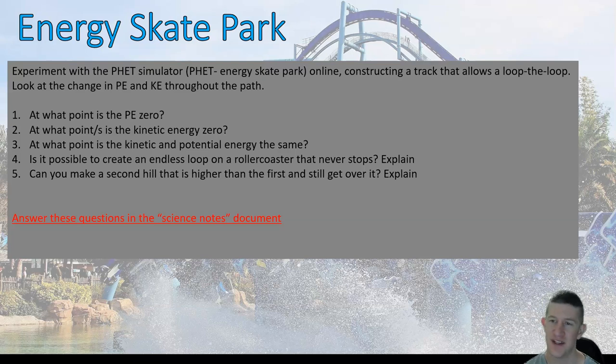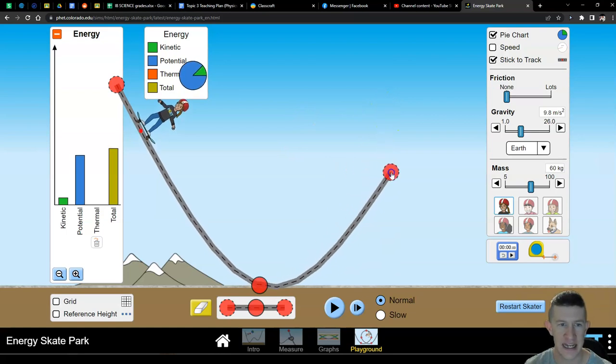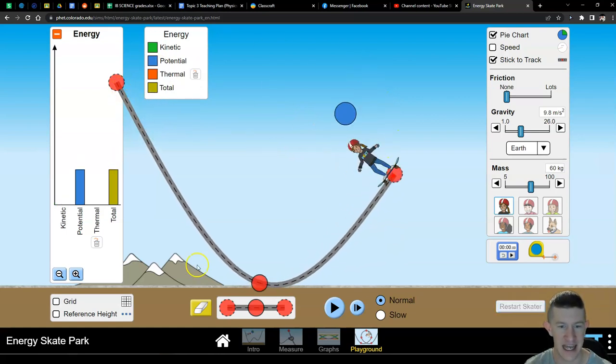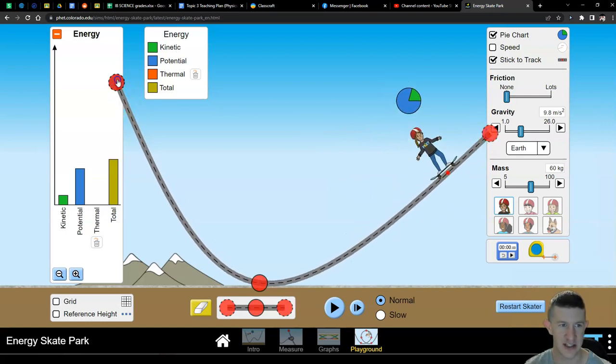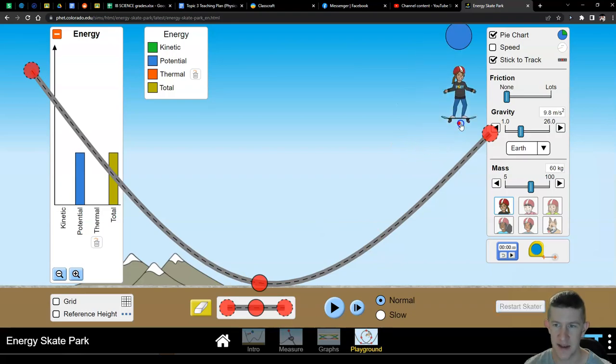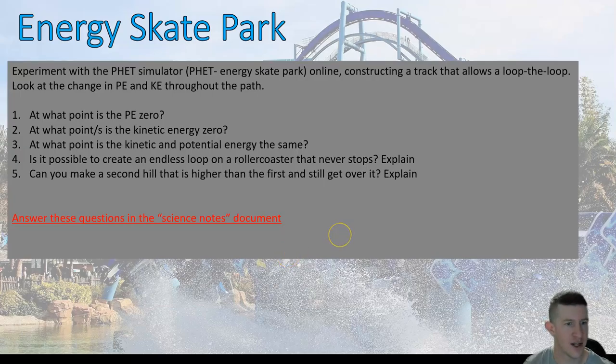I want you to experiment with this simulator. Construct a track that allows a loop-the-loop and look at the change in potential and kinetic energy throughout your path. These questions will be answered in your science notes document on Google Classroom. At what point is the potential energy zero? At what point is the kinetic energy zero? Where would kinetic and potential be equal? Can you create an endless loop that never stops? Can you make a second hill that is higher than the first and still get over it? That's the challenge for you.